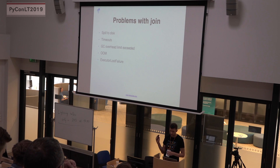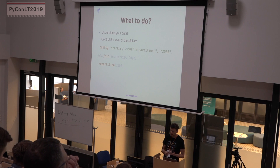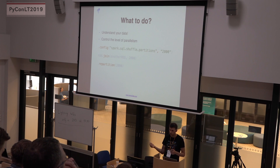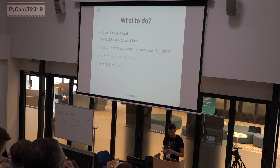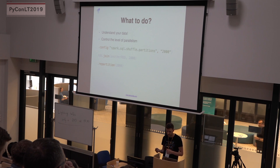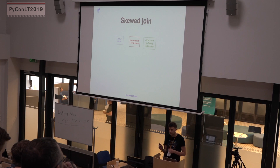How do you fix that? First, you have to understand your data — that's a general comment for whichever system you work with. If you process a lot of data, you have to understand it, find clues in the Spark UI, and once you know what the problem is, you control the level of parallelism by increasing the number of tasks until it works reasonably well.